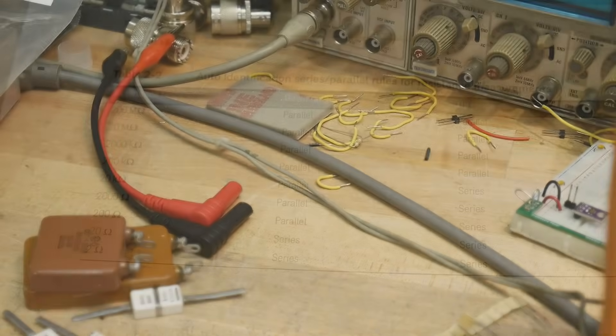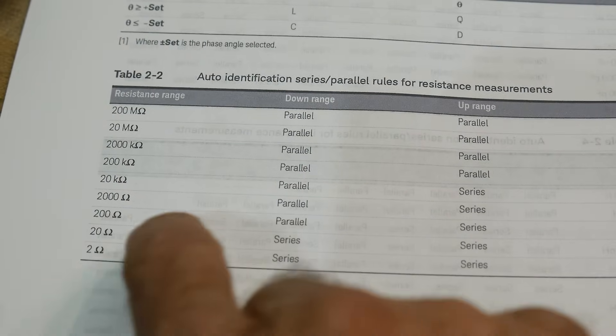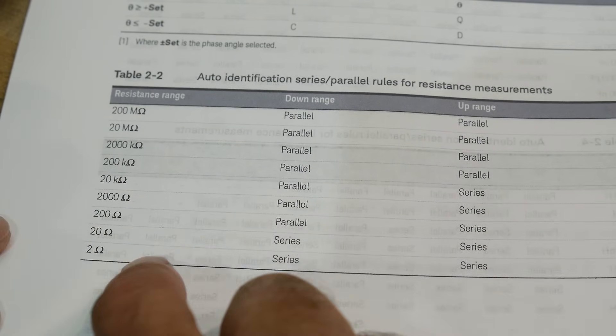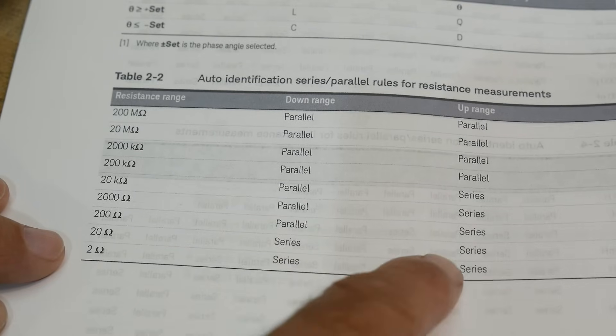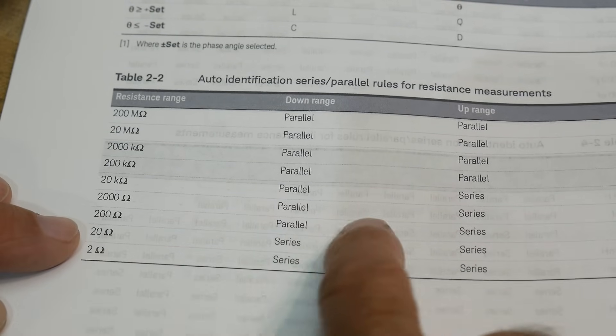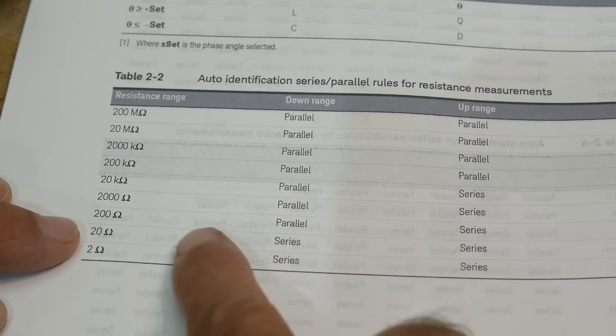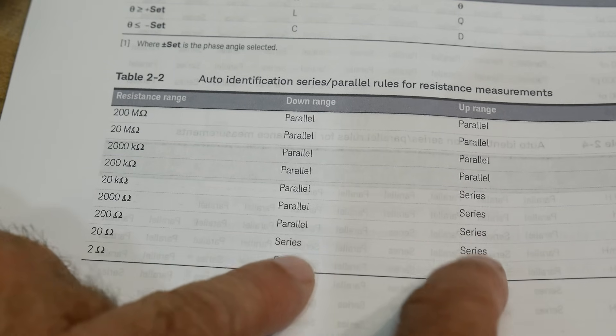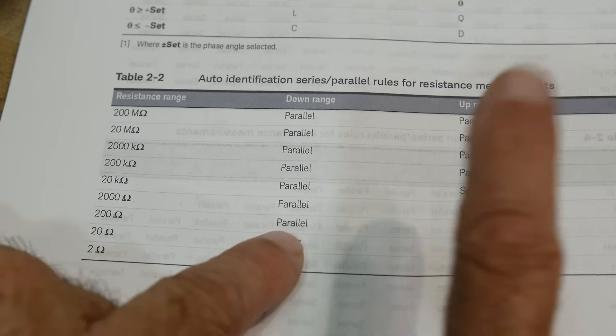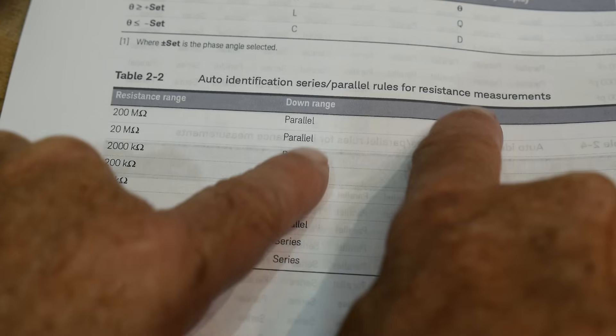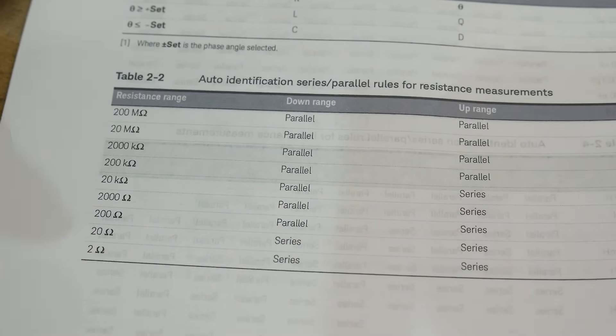It's in the manual. So hopefully you can read this print out here, but you can see that for resistance, if it's below around 100 ohms, 200 ohms, it's shifting gears into series. And then if it's above 200, 100, 200 ohms, it's going into parallel mode. And that's just for a resistor.